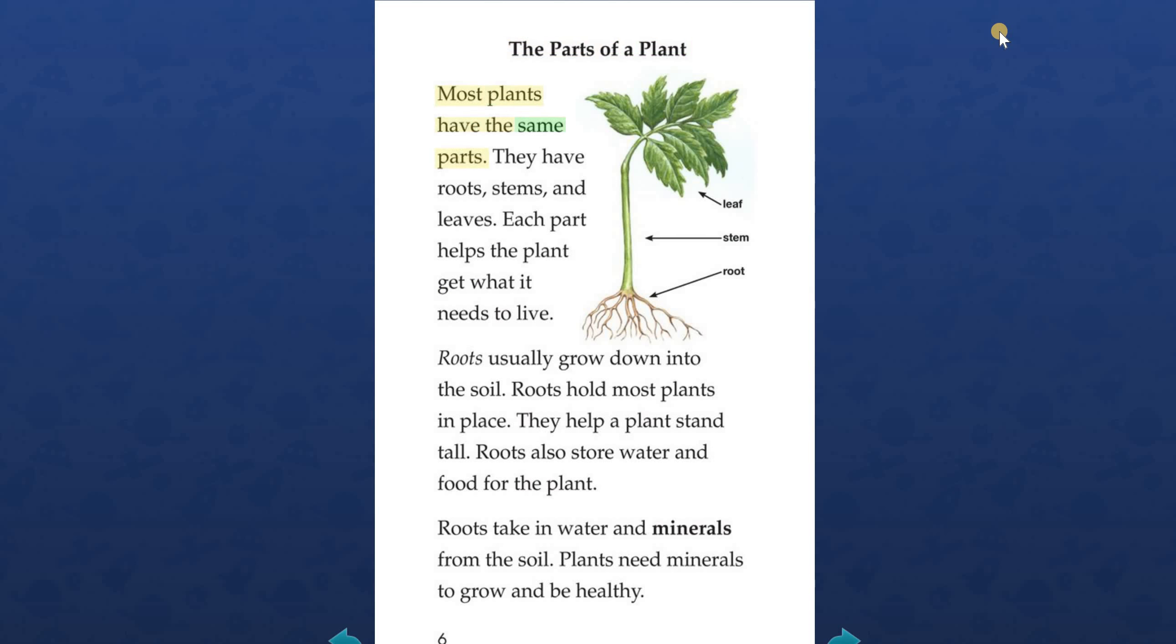Most plants have the same parts. They have roots, stems, and leaves. Each part helps the plant get what it needs to live. Roots usually grow down into the soil. Roots hold most plants in place. They help a plant stand tall. Roots also store water and food for the plant. Roots take in water and minerals from the soil. Plants need minerals to grow and be healthy.